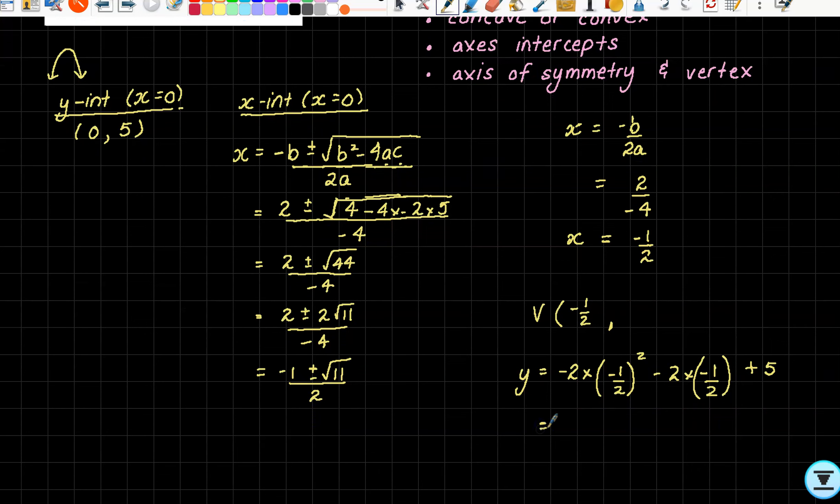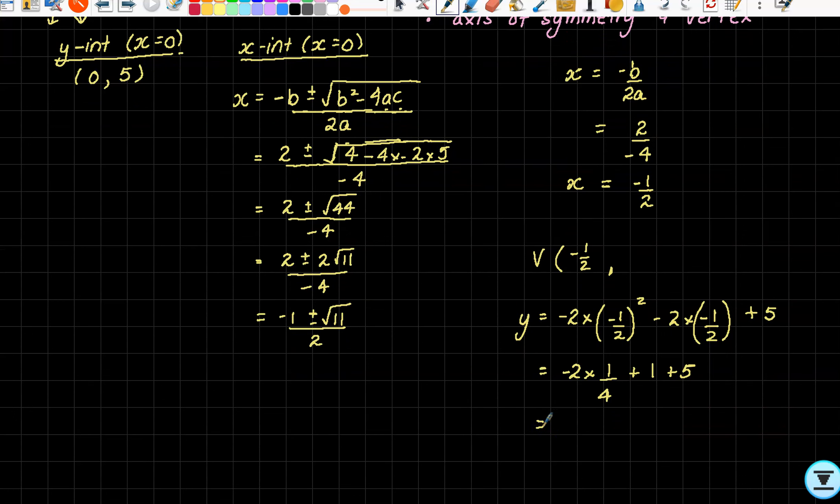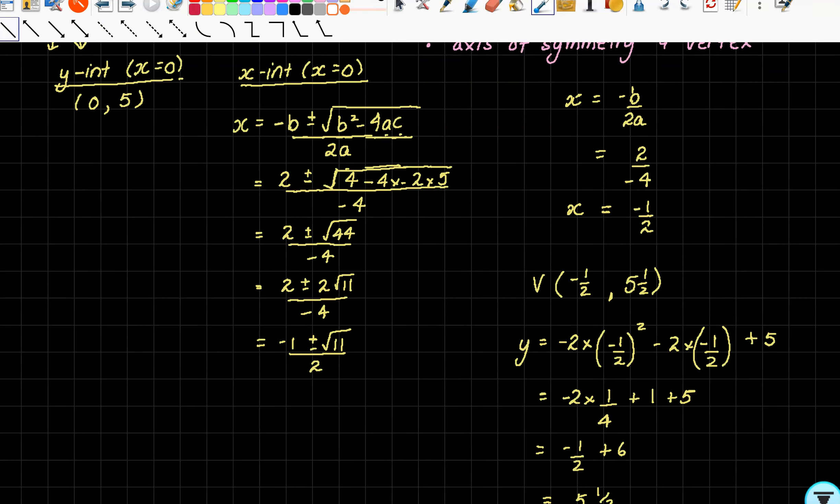We should be able to solve this without using a calculator. When we square -1/2 that's 1/4. Negative times a negative is a positive: -2(1/4) = -1/2. Then -2(-1/2) = 1, plus 5. If this was an open calculator test, we'd go for it and use your calc. This becomes 5 1/2. So my vertex is now (-1/2, 5 1/2).